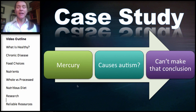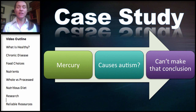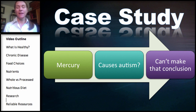We can't say that mercury causes autism based on a case study of just observing this — you can't make that conclusion. But it does give grounds; it is an observation that can then be studied in more detail.